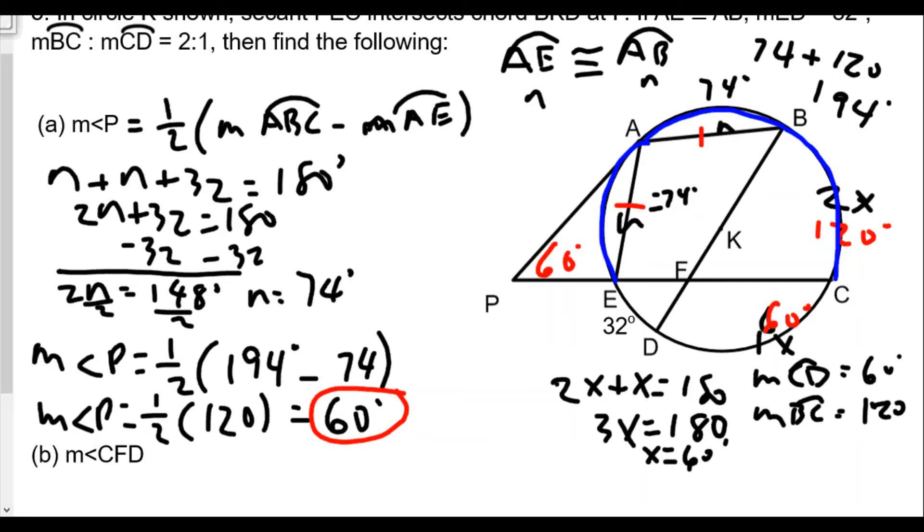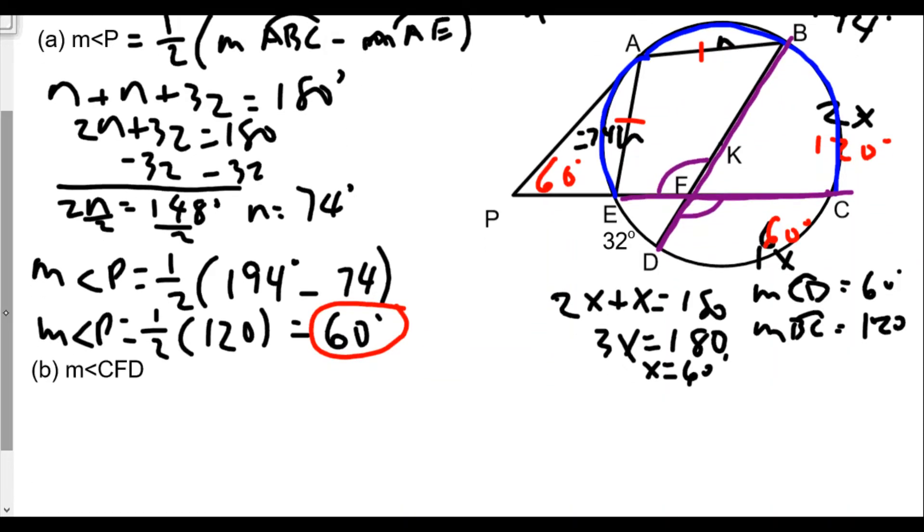I'm going to put 60 degrees here because we're probably going to find use for this. Now the second question is find the measure of angle CFD. Well, CFD is this angle right here, an angle formed by two chords intersecting, chord CFE and chord BKD.